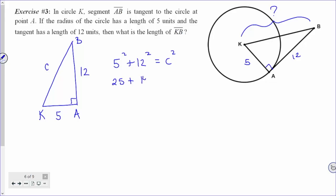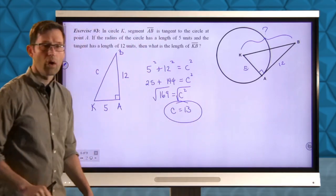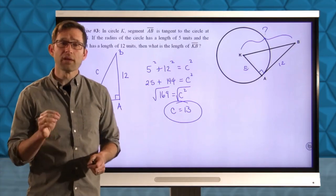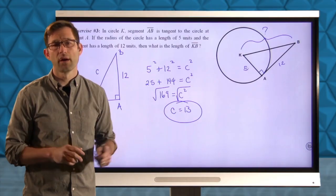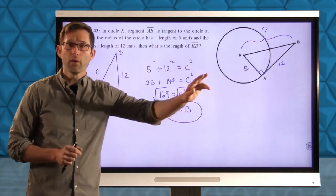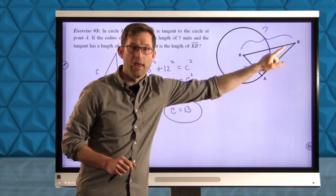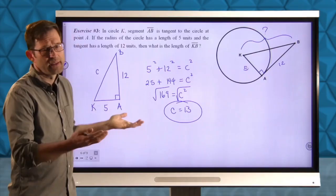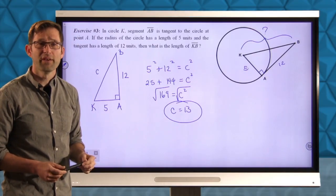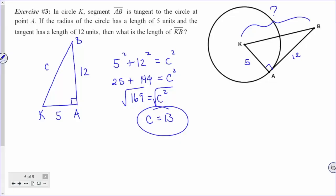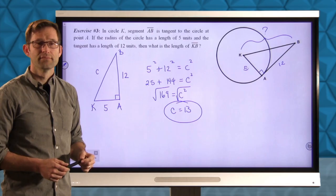That's 169 is C squared. Take the square root of both sides. And C is 13. Again, not an overly difficult problem. The key here is the fact that we have to recognize that that's a right triangle. And the only way to recognize that this is a right triangle is by knowing that KA is perpendicular to AB. Again, let me step out of the way so that you can look at the Pythagorean theorem a bit, and then we'll move on to the next problem.